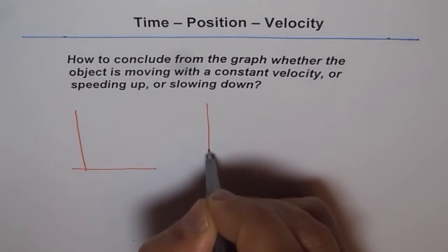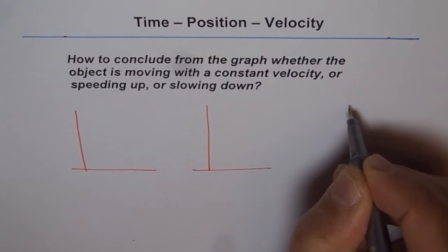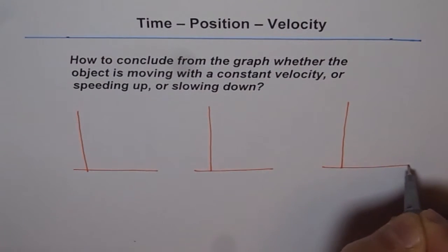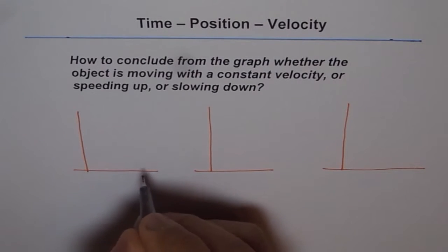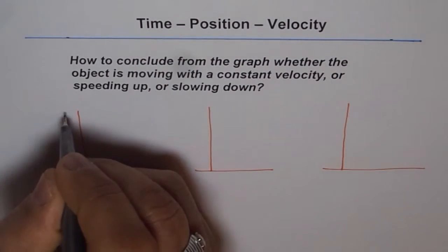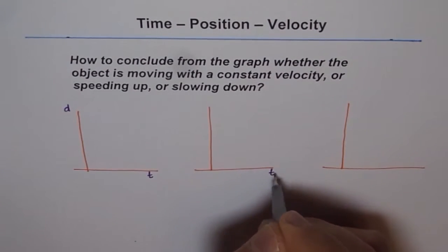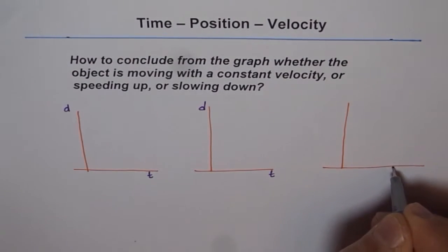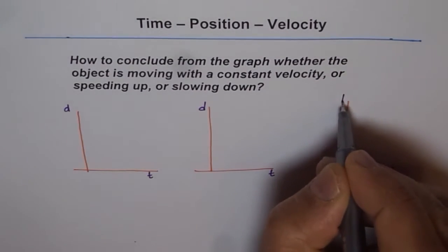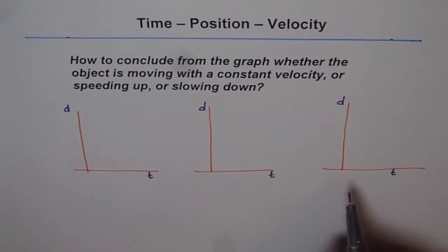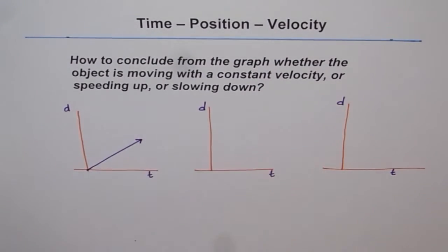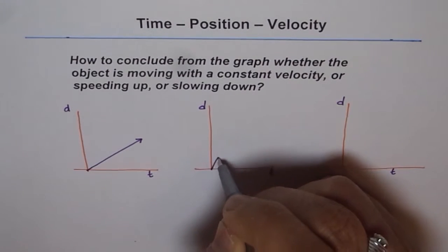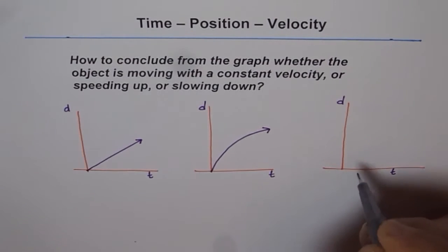So this is the first graph here, the second one will be drawn here, and then the third one. I'm not giving any scales. We'll assume that we have time along the x-axis and distance along the y-axis in all three cases. Time is the independent variable on the x-axis, and distance depends on time on the y-axis. The first is a straight line, the second is a curve like this, and the third is a curve like this.